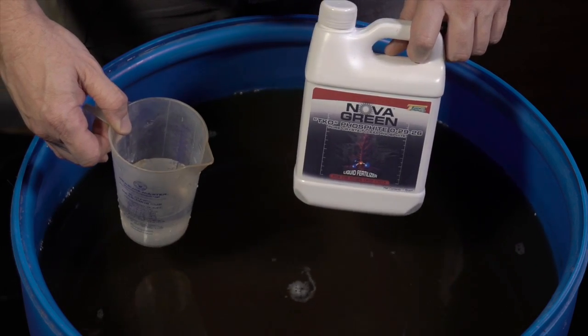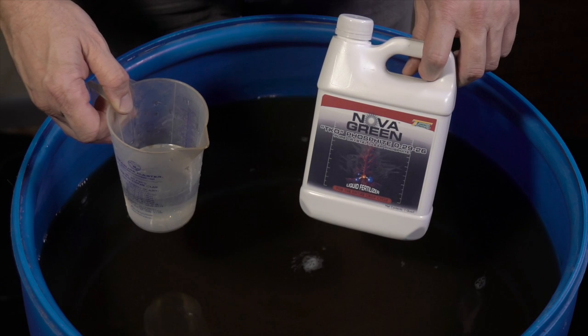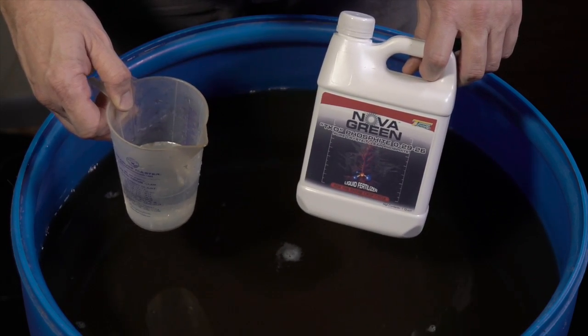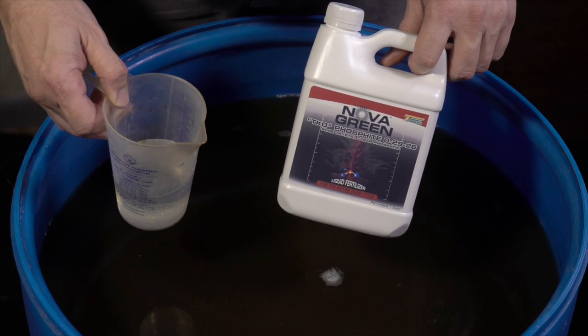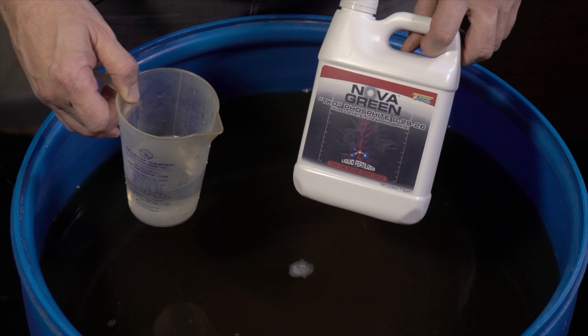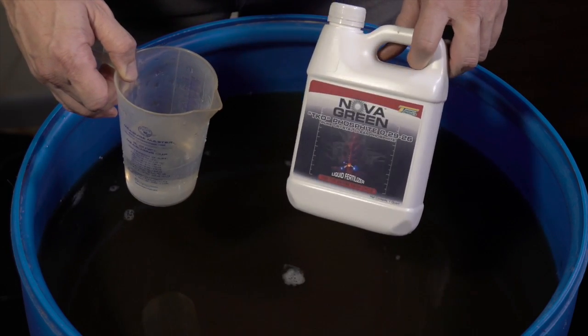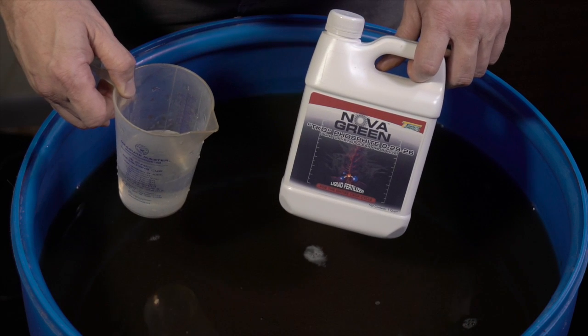Next is our TKO product. This is our phosphide or our PK booster. It's fed at four mils to the gallon. Now, if you're feeding to deep current or more of a hydro system without, so it's like cocoa, you're fine on this mix. But I've found that because of this phosphide being so readily available in the root zone that it's good to tone it down.